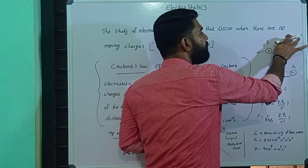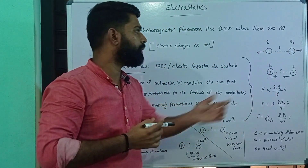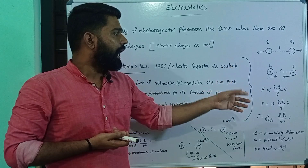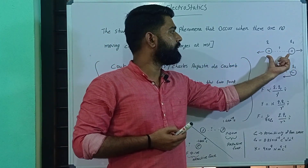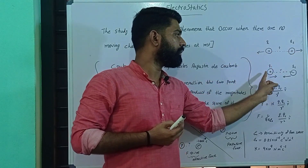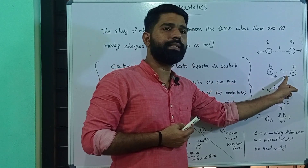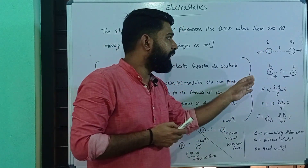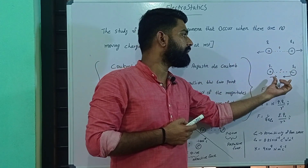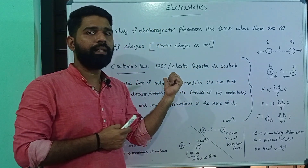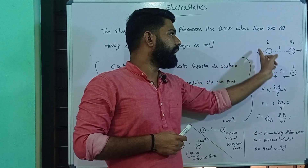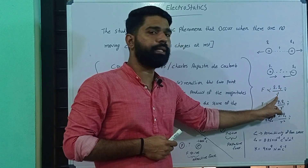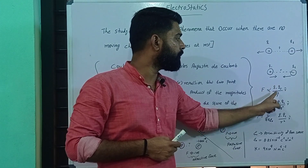This is the Coulombic force. The magnitude of the charge and the separation — how many charges are separated — the distance is inversely proportional. This is the positive charge. The same charges will repel each other. Different charges — q1 positive and q2 negative — at that distance, q1 and q2 will have an attractive force. Different charges attract each other. The same charges repel each other.